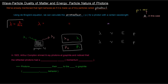This is the de Broglie wavelength equation, and you'll notice at the bottom we have M times U — which is basically momentum. So we can replace M times U with P, giving us: wavelength equals Planck's constant over P. From there, we can solve for momentum and get that momentum equals Planck's constant divided by lambda.